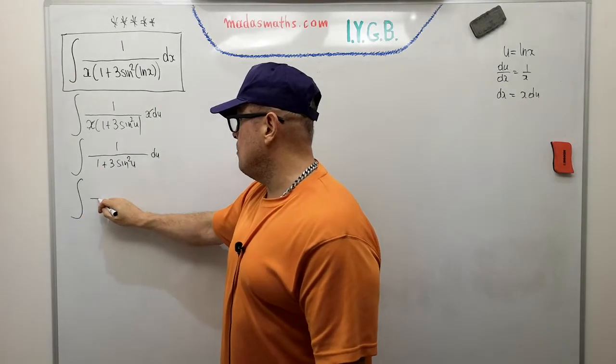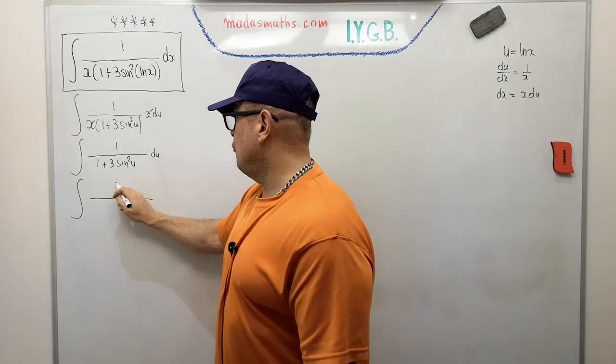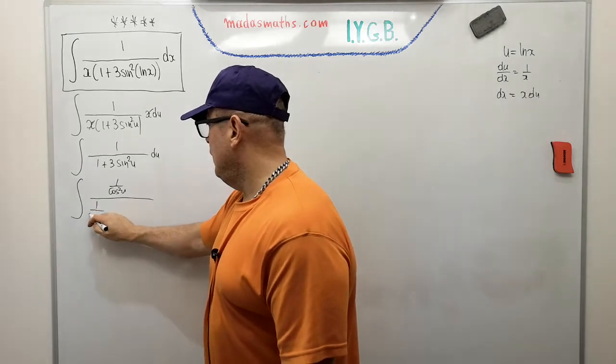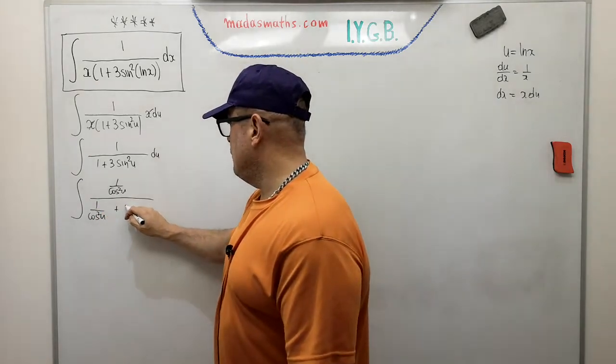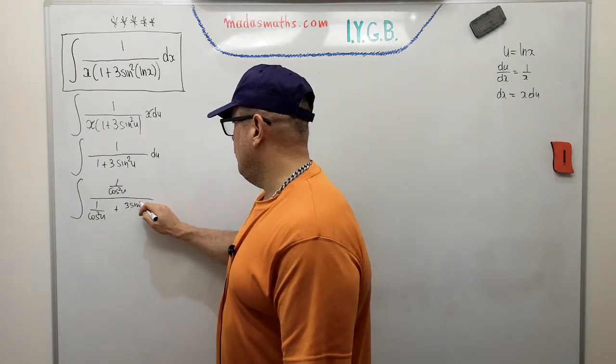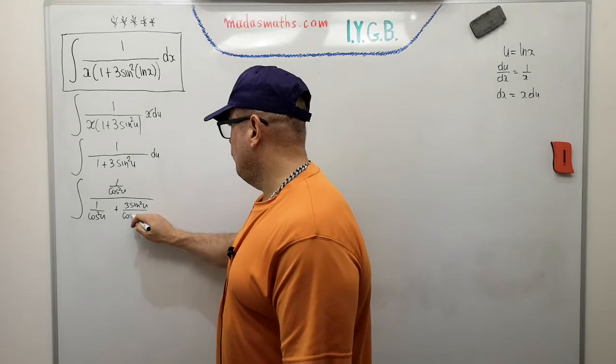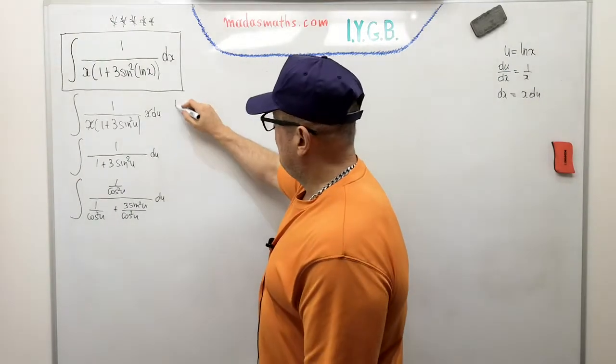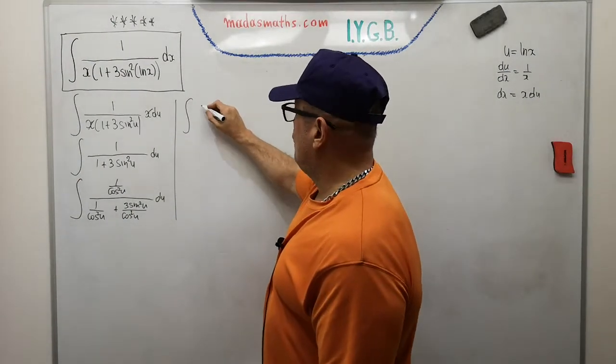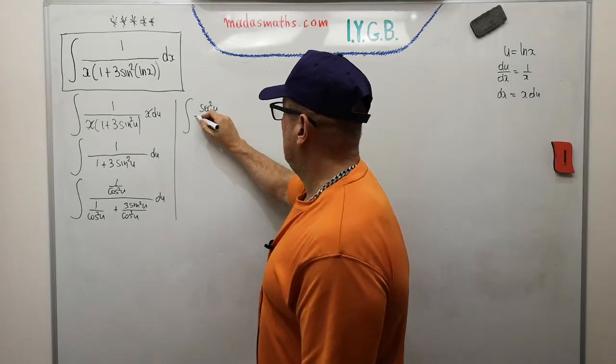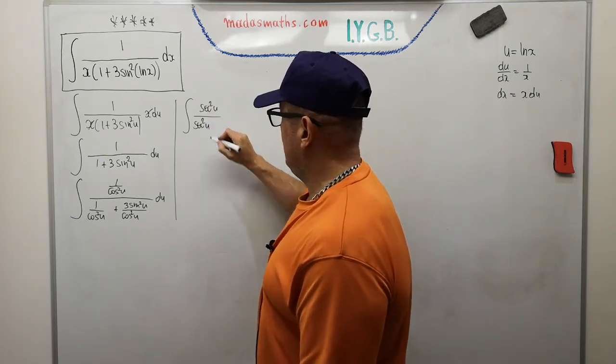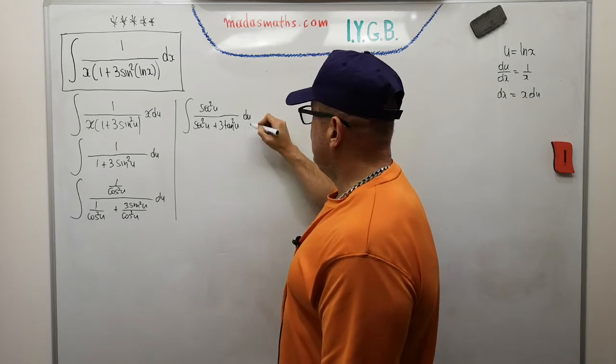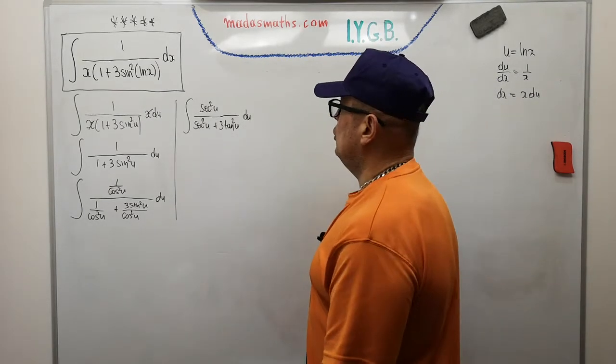So I'm dividing top and bottom of the integrand by the cos squared. So one over cos squared of u over one over the cos squared of u plus three lots of sine squared of u over cos squared of u, du. And this will now simplify. It will become the integral of sec squared, another sec squared, plus three lots of tan squared, all arguments u, du.